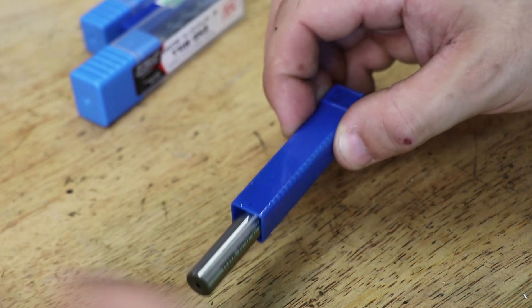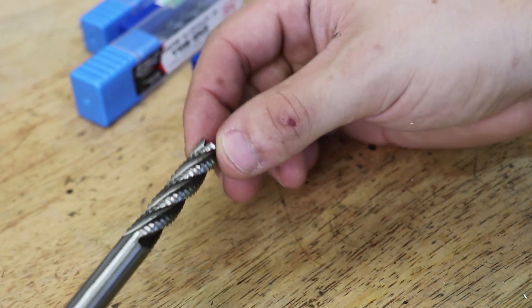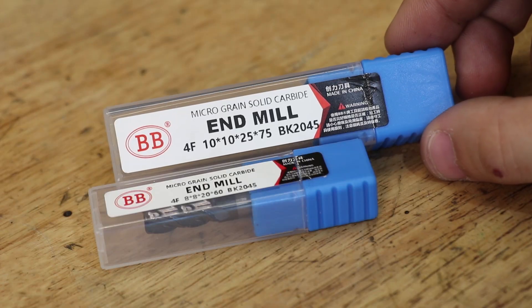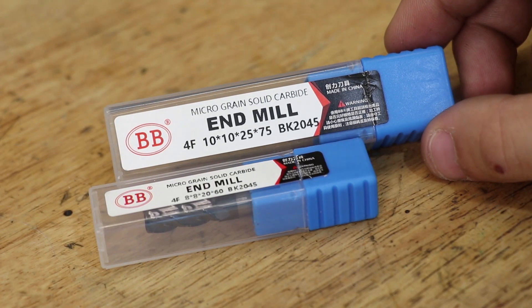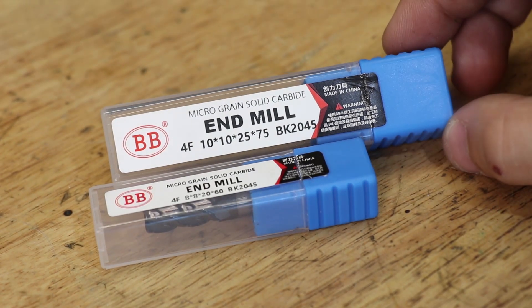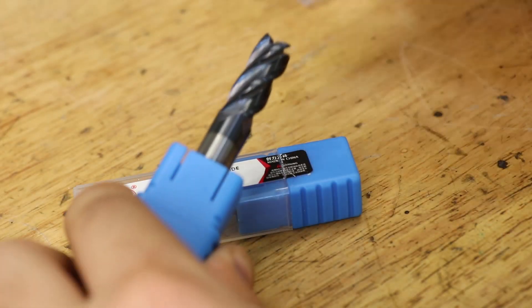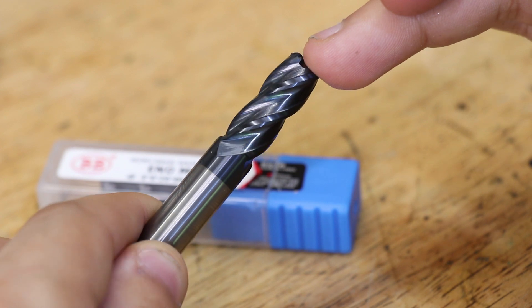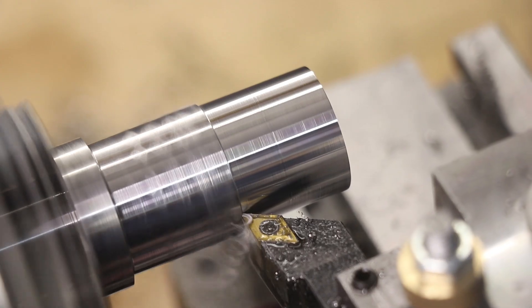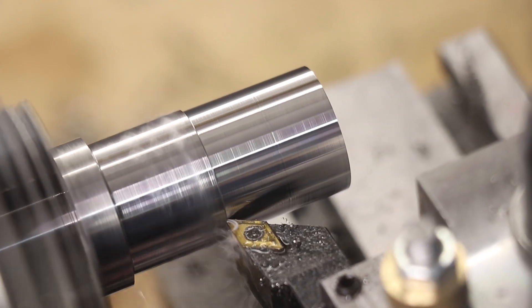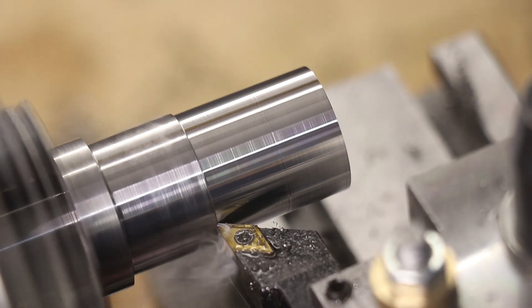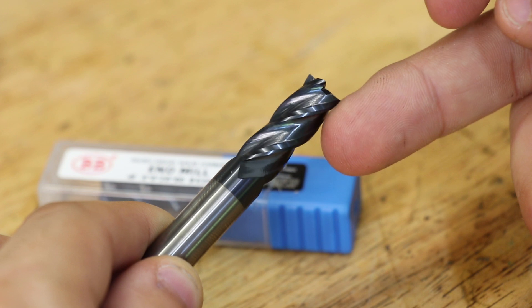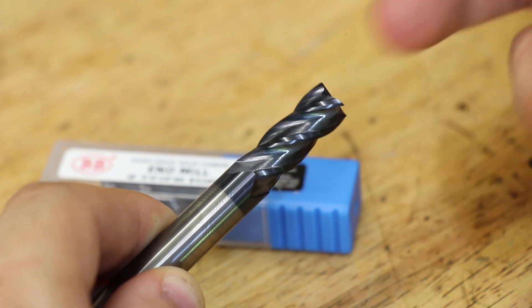This time I bought some roughing end mills because I wanted to see what the quality was like and at the same time I also picked up some solid carbide end mills. Now my mill probably isn't rigid enough nor powerful enough to run these at the optimal feeds that they're designed for, but I am curious to see what they can do. Plus I'm also interested in what an eight dollar carbide end mill can do.